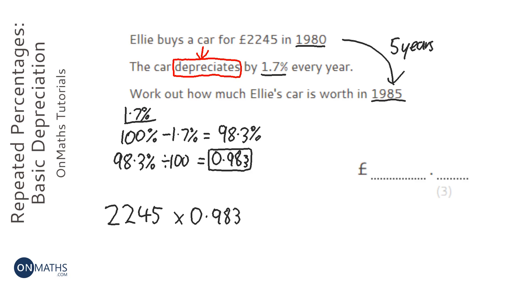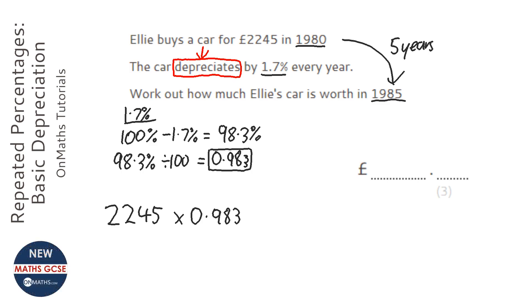We need to times it by 0.983 five times, but instead of writing 0.983 × 0.983 × 0.983 five times, we can just do it to the power of five and get the same answer. In the exam you can write times 0.983 five times — that's absolutely fine.